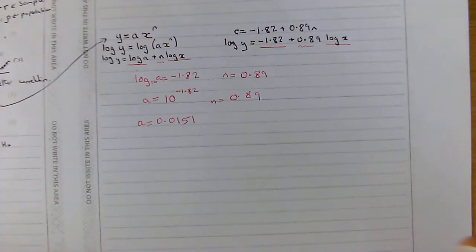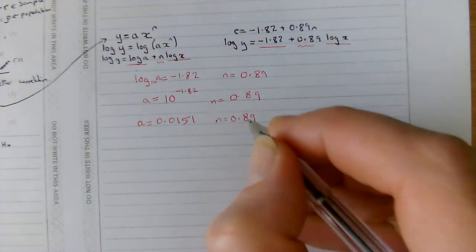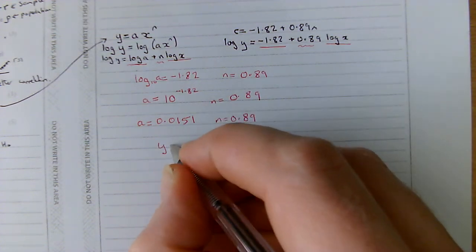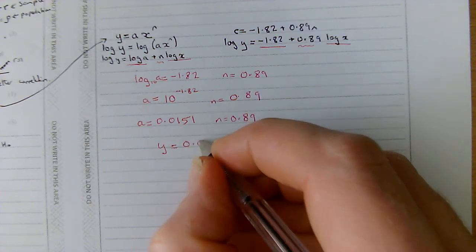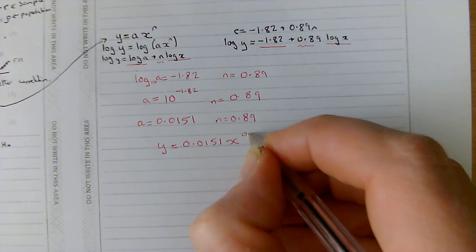And N equals 0.89. So, let's just finalise that by rewriting the equation as y equals 0.0151 x to the power of 0.89.